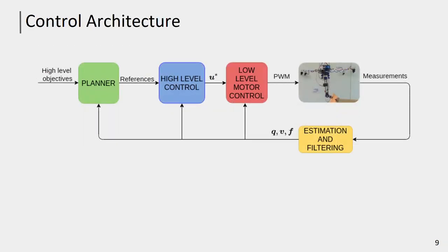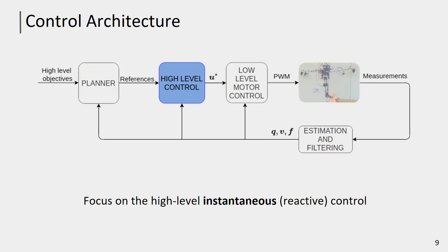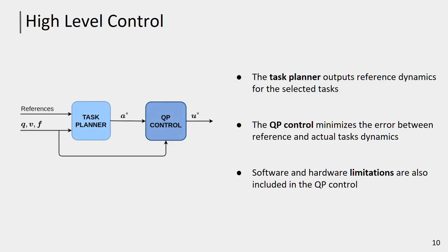The control architecture is composed of two nested loops. The low-level motor control achieves the optimal control input U-star generated by the high-level controller. The planner instead provides references to the high-level controller. In this paper, we focus our attention on the design of the high-level controller. The proposed control approach is instantaneous and reactive because it takes into account only the current time step in the control design. The high-level controller is composed of two blocks: the task planner and the QP control. The task planner generates reference dynamics for the selected tasks, while the QP control minimizes the error between the actual and the reference task dynamics, also including hardware and software limitations in the optimization problem.